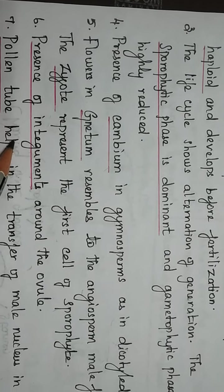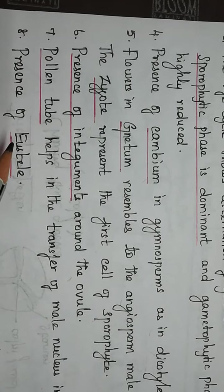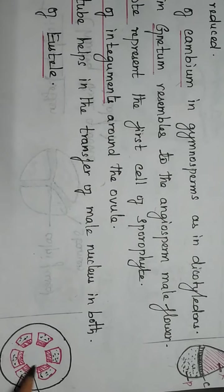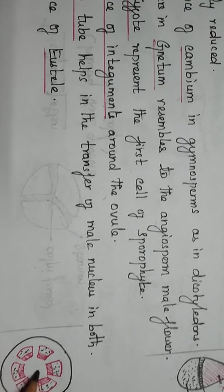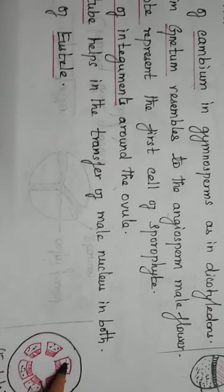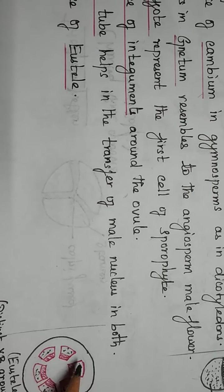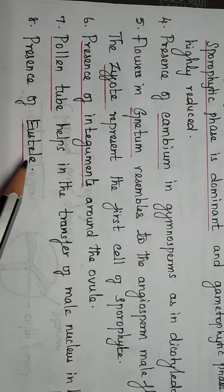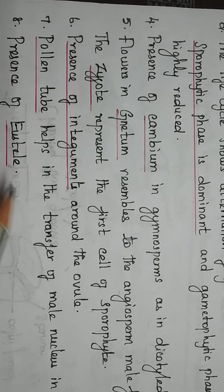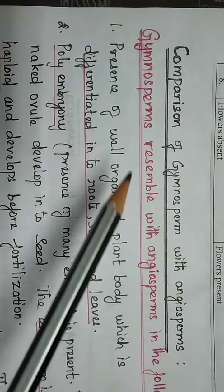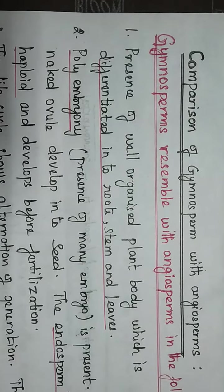Now we can see a distinct collateral vascular bundle arrangement around the pith called eustele. This eustele is present in both gymnosperms as well as angiosperms. These are the resemblance characters of gymnosperms with angiosperms.